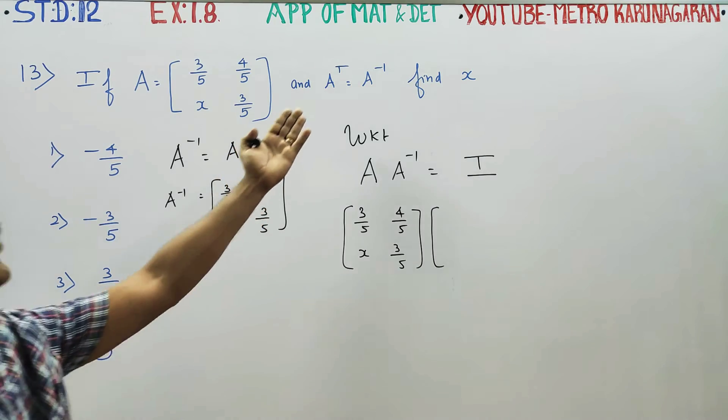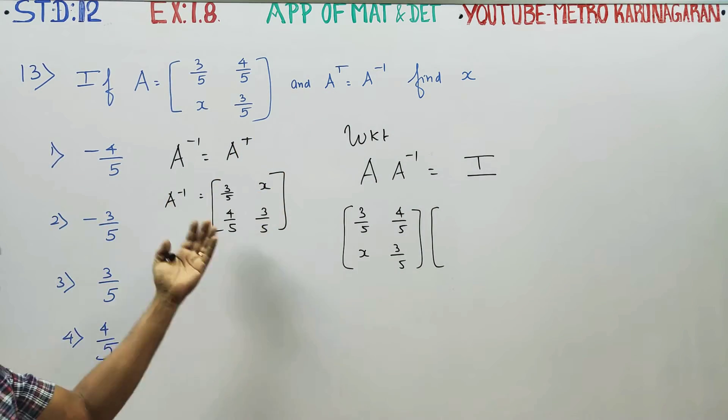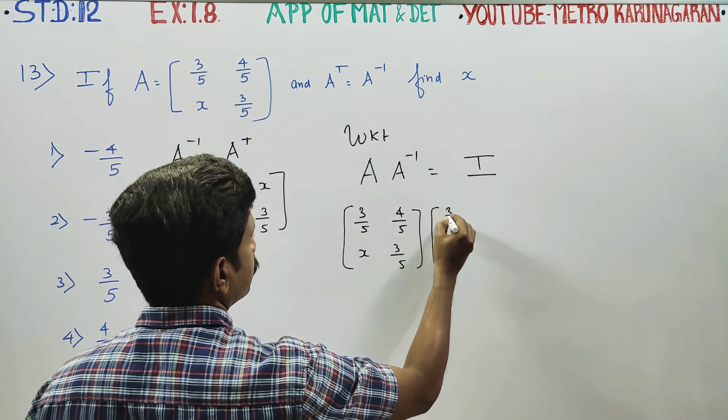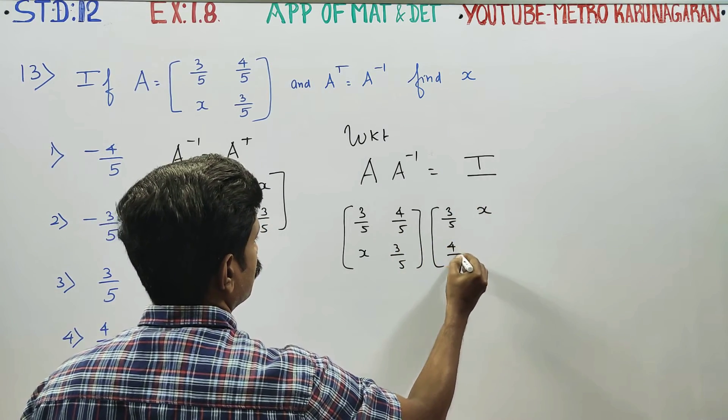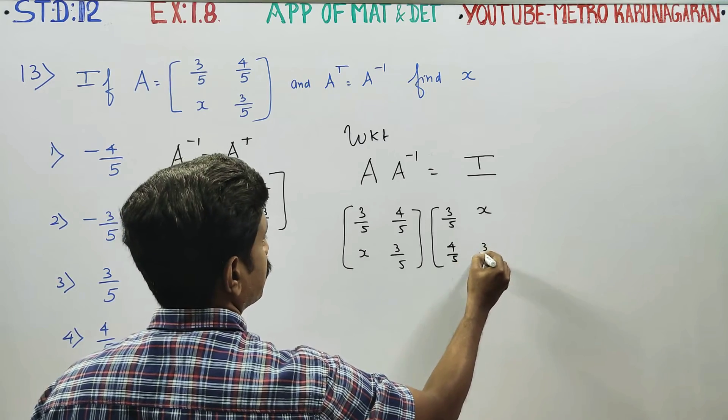A inverse, just now in the formula I use, we have made it. Now, 3 by 5, 3 by 5, X, 4 by 5, 3 by 5.